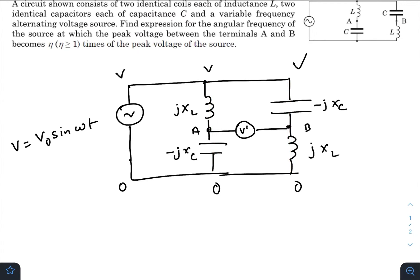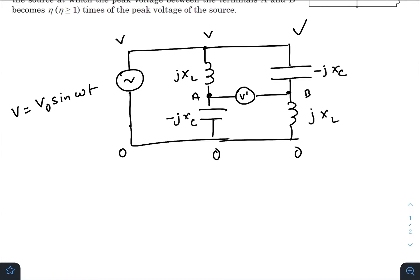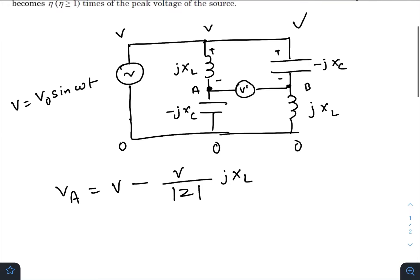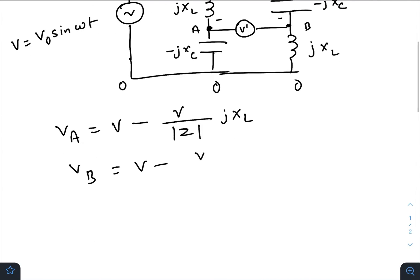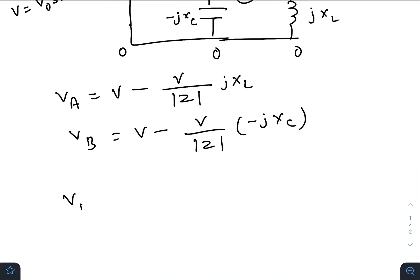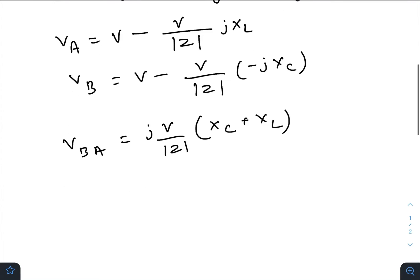If we find the potential at point A, it would be VA equals the potential at this junction, which is V minus the potential drop here. So V minus the current, V divided by |Z| times jXL. Similarly, potential at point B would be V minus V divided by |Z| times (-jXC). So potential difference between B and A will give you V/|Z|(XC + XL).